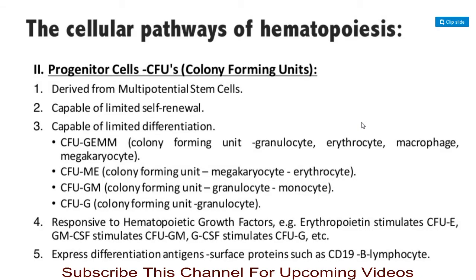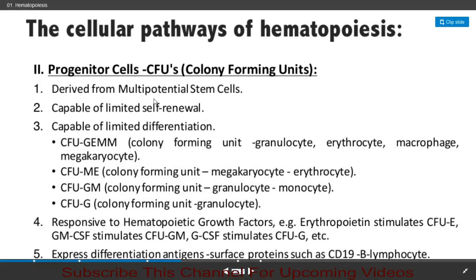Next are the progenitor cells, also called colony forming units (CFUs). These progenitor cells are derived from multipotent stem cells. They are capable of limited self-renewal and limited differentiation. Colony forming units include CFU-granulocyte, CFU-erythrocyte, CFU-macrophage, and CFU-megakaryocyte.